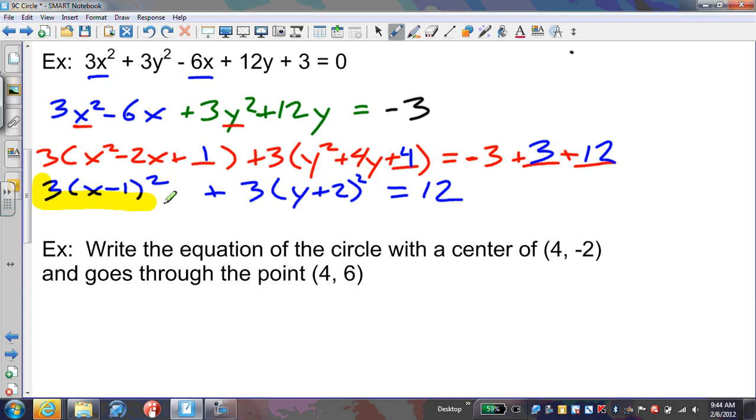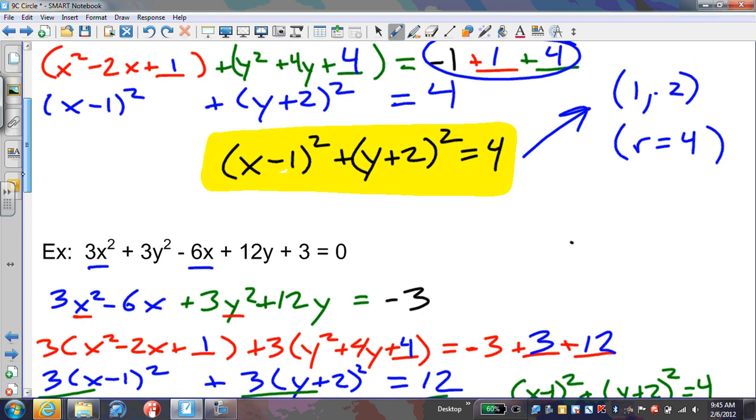Are we done yet? Not quite. We need to take it one step further - divide everything by 3. Our final equation is (x - 1)² + (y + 2)² = 4. From here, we can see the center is (1, -2) and the radius is 2, very similar to the previous example.